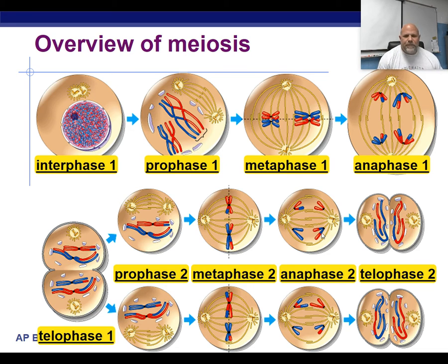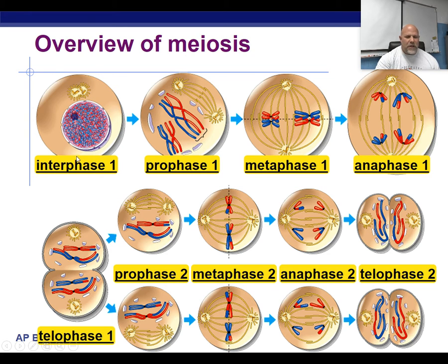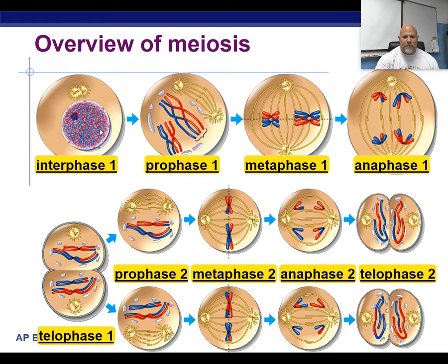So if you look at meiosis here, you can see we have two divisions. We go through cell division once and then we go through cell division again. So for each cell that we start off with in meiosis, we're going to end up with four gametes. Those gametes are going to have half the normal number of chromosomes that the original cell has, so that when fertilization takes place we get back to the correct number of chromosomes.